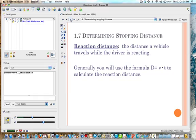So we want to define some terms when we're talking about stopping distance. And the first one is the reaction distance. This is the distance a vehicle travels while the driver is reacting. Now generally we're going to use the formula D or distance equals V times T, velocity times time, to calculate the reaction distance. So it's sort of dependent upon the reaction time. Once you know what the reaction time is and you know how fast the vehicle is moving, then you can find the reaction distance. So obviously the slower the reaction time, the greater the reaction distance.